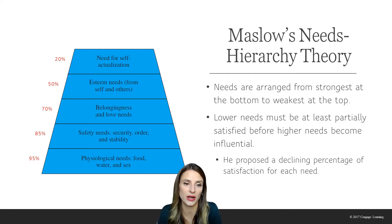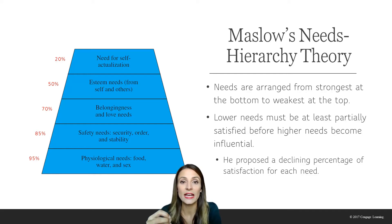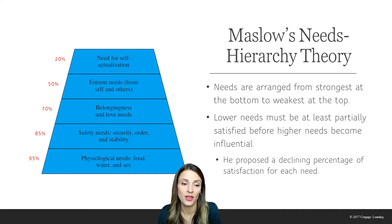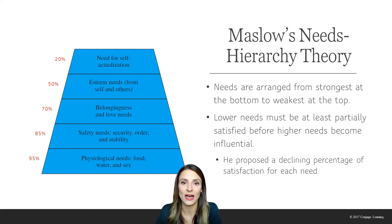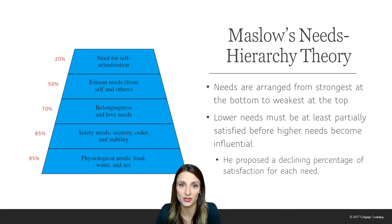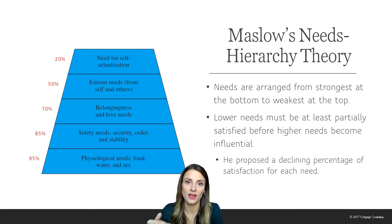I have an example on the screen. The very top need, self-actualization, is the weakest need and the most difficult to meet. At any given moment, you might have 20% of that need satisfied. The esteem needs are stronger and might be satisfied at 50%. Your physiological needs might be mostly met at 95%, safety needs at 85%, and belongingness needs at 70%. As you move up the hierarchy, the needs become weaker and less satisfied.